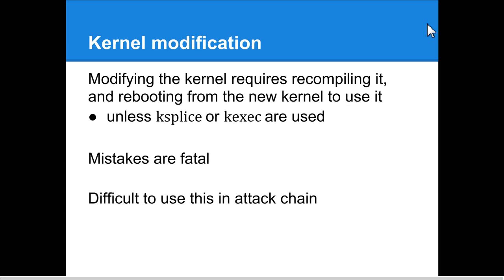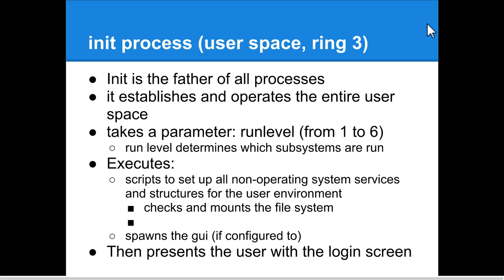Kernel space is rings one and two. Most drivers run here, and it's much different from user space. A crash here can be fatal. Random number generation is very difficult here, along with handling decimals. Mistakes are very unforgiving in coding at this level. Kernel modification normally requires recompiling the kernel and rebooting. However, there are other ways to modify the kernel — tools like Ksplice and Kexec. Ksplice allows you to modify the kernel on the fly; Kexec allows you to select a new kernel without rebooting.